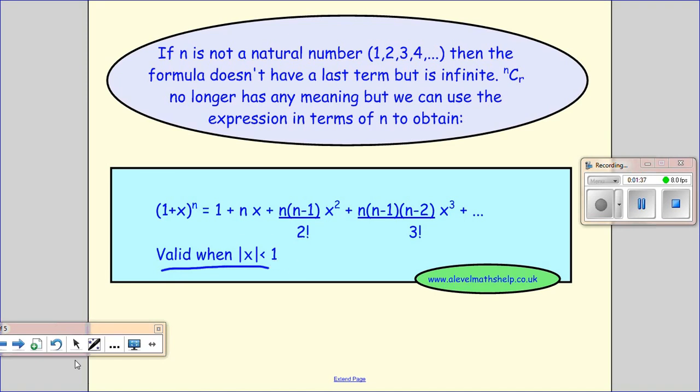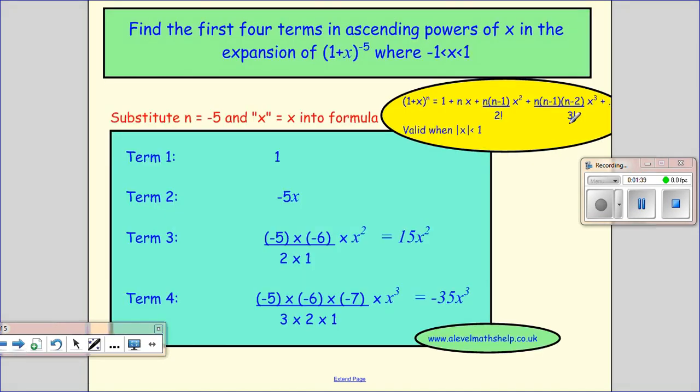Okay, so all we do is we take the formula which I have here. So find the first four terms in ascending powers of x in the expansion of this, and where x is between minus one and one, so we're happy that we can use our expansion. And we then just substitute in for n equals minus 5 and x equals x. And I've written that there because that might be 3x here, and then your x would be 3x.